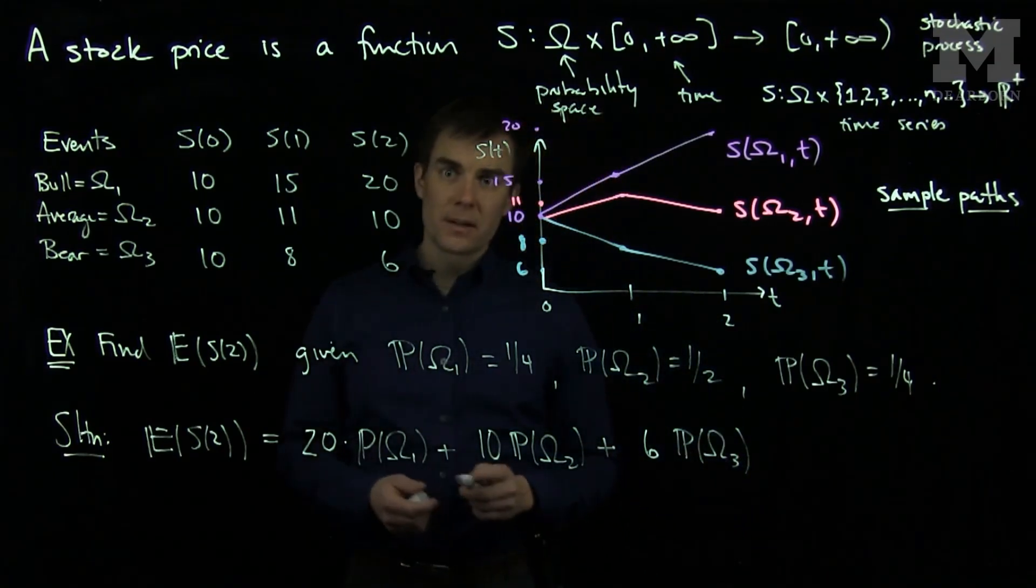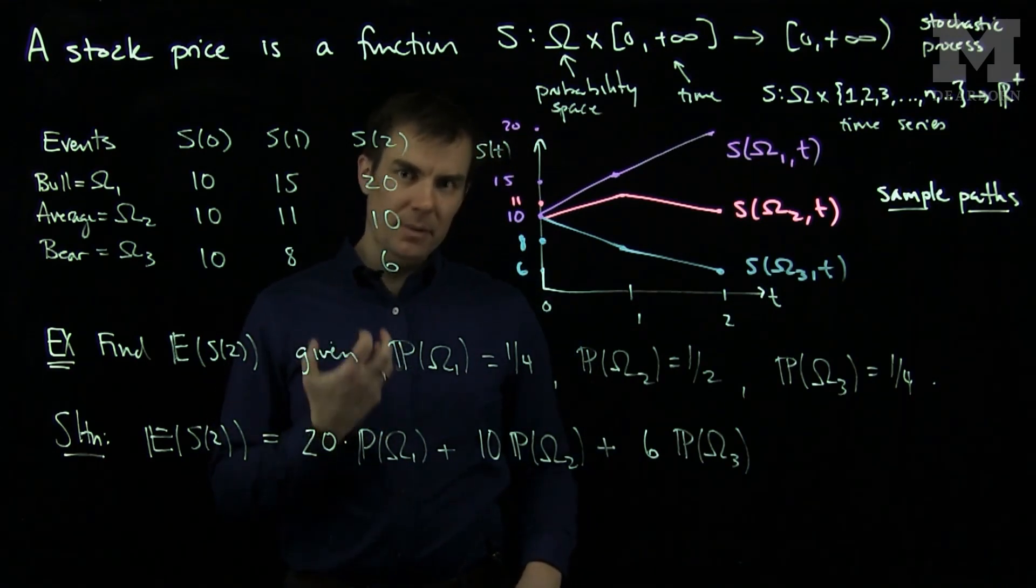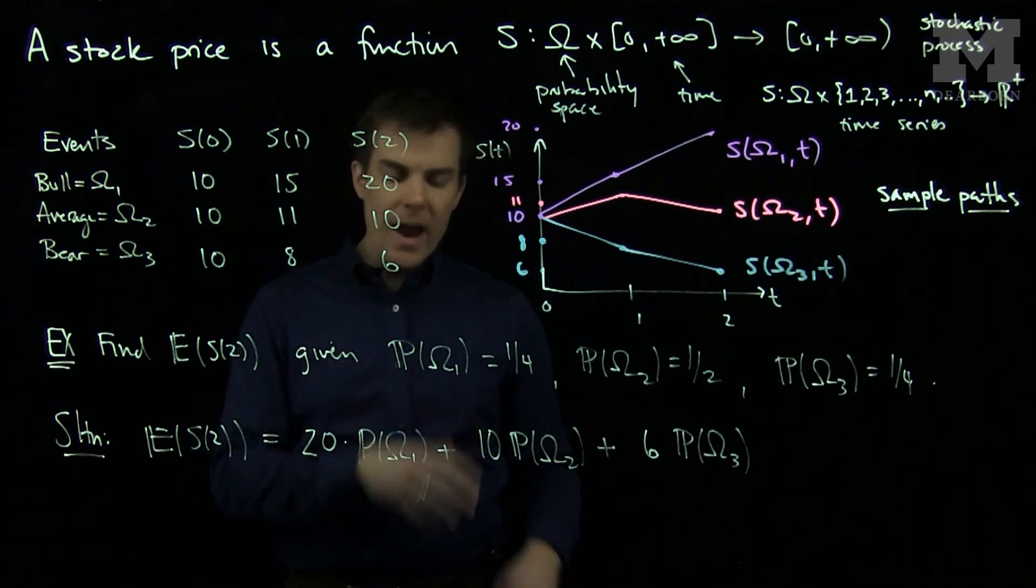So I'll have six times the probability of omega three. So to compute the expected value, you find the values of the stocks on each of those events and you multiply them by the probability those events happen. And then you add up all the results.